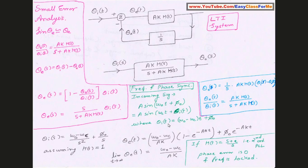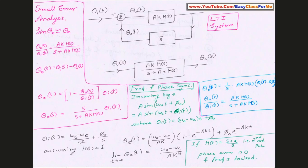We now have the expression for Θᵢ(s). In the frequency domain, with θᵢ(t) = (ω₀ - ω_c)t + φ₀, the Laplace transform gives Θᵢ(s) = (ω₀ - ω_c)/s² + φ₀/s. We also assume H(s) = 1 (all-pass filter) for simplicity — this means it passes every frequency. Substituting these values into the expression for θₑ(s) and taking the inverse Laplace transform, then letting time tend to infinity, we get a constant expression for θₑ(t).